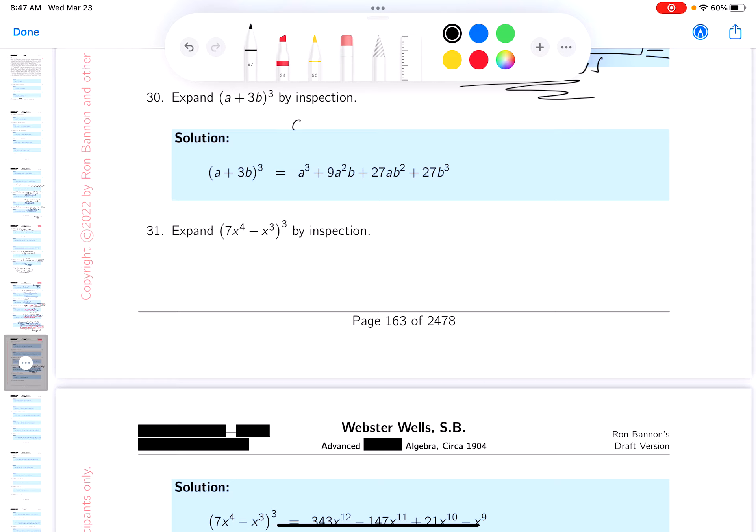I'm gonna see an a³, that's for sure. I'm gonna see an a², that's for sure. I'm gonna see an a to the first power. I'm gonna see an a to no power.